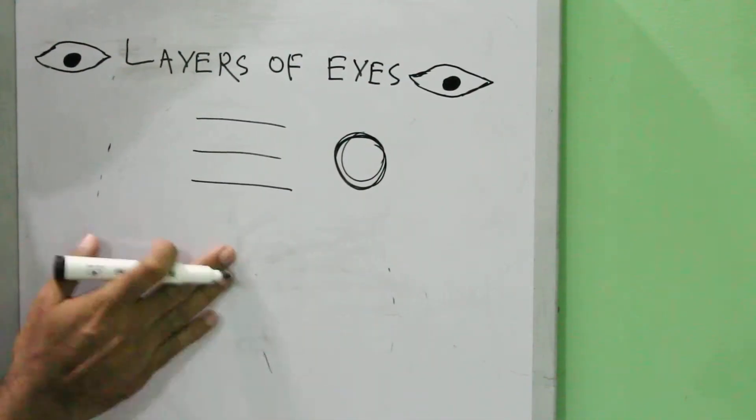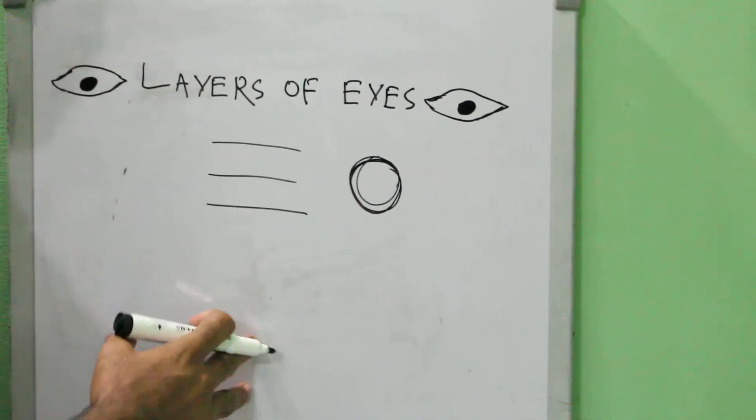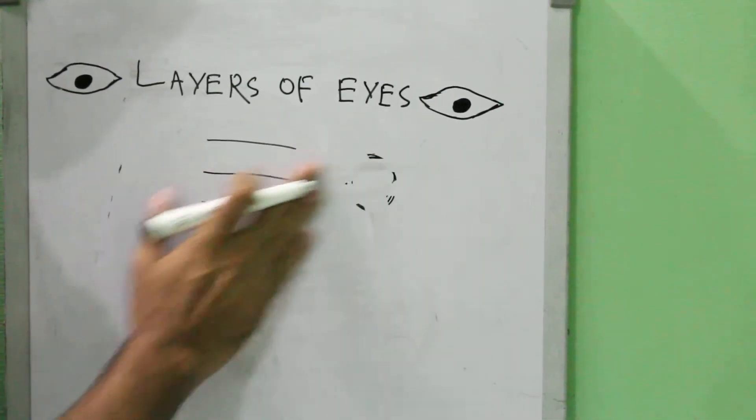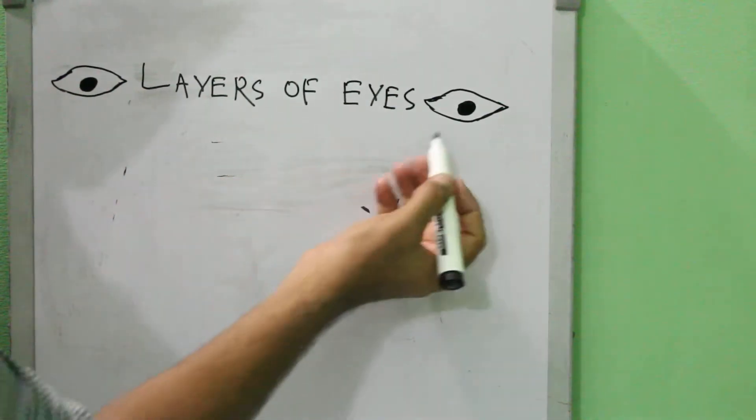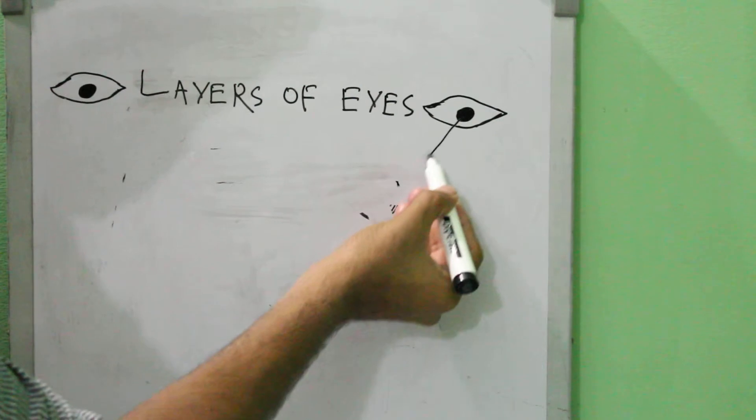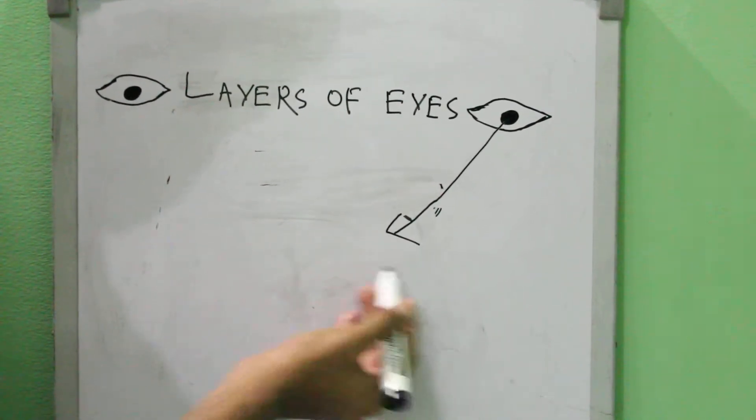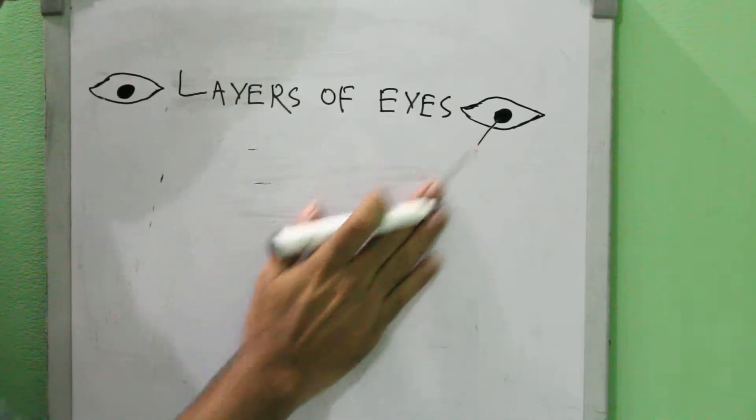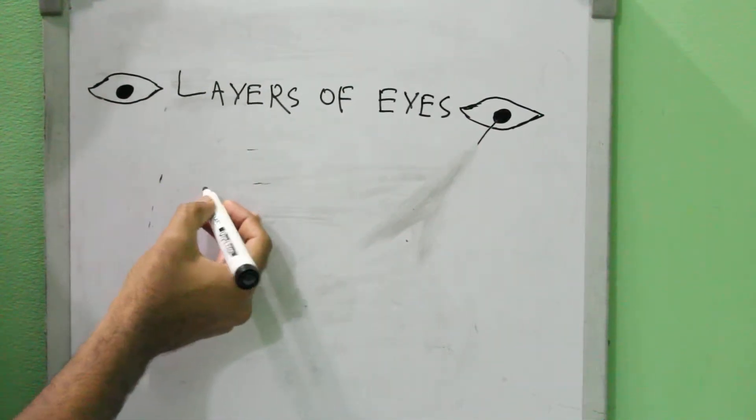Now I will discuss the three layers that make the eyeball. First of all, we go from outside to inside. I'm making this eyeball zoomed. It has three layers. The first layer of the eyeball is...